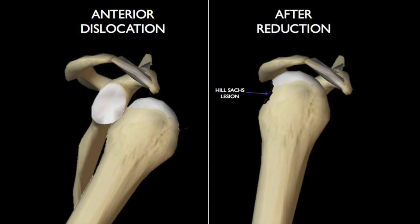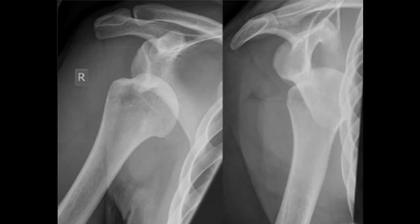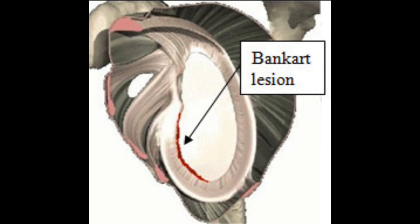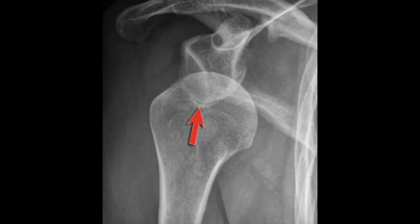A Hill-Sachs deformity is a cortical depression in the humeral head, occurring in up to 35 to 40% of anterior shoulder dislocations and identified best on the AP view. This deformity occurs when the posterior humeral head moves forward and strikes the anterior glenoid, causing a depression. A Bankart lesion occurs when the humeral head moves anteriorly and tears part of the labrum. Bony Bankart lesions occur when the anteriorly dislocated humeral head tears or disrupts the glenoid labrum and pulls a piece of glenoid bone, causing an avulsion fracture. Other fractures — present about 10% of the time — include greater tuberosity fractures.